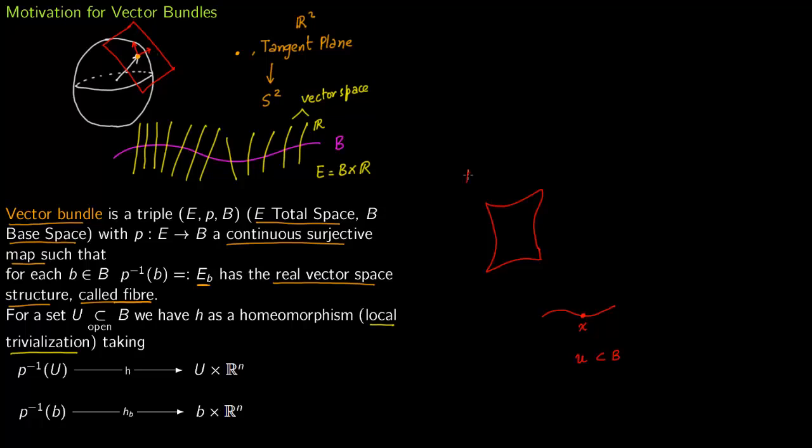So this is P inverse of U and let us draw this curve in it again. So this curve is drawn like this, this point x comes like this. So let us first focus on this map and say this map gets mapped to U times R^n again. This curve looks something like this here. So you have this homeomorphism right here.